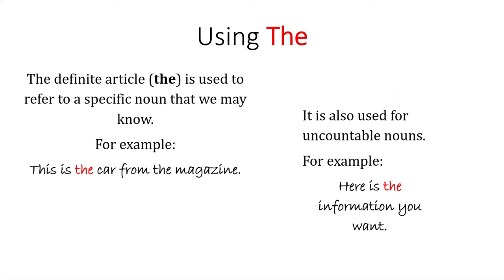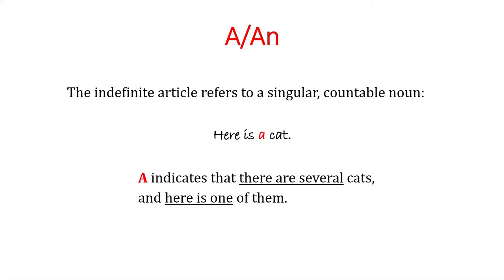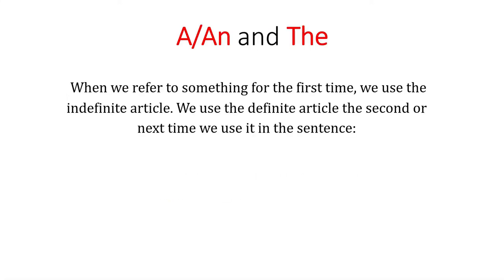The indefinite article refers to a singular countable noun. For example: 'Here is A cat' — that means there are many cats and this is just one of them. When we refer to something for the first time, we use the indefinite article.